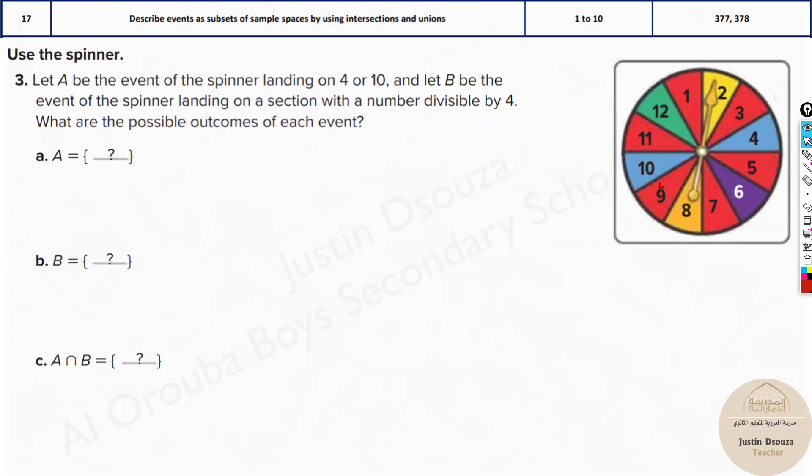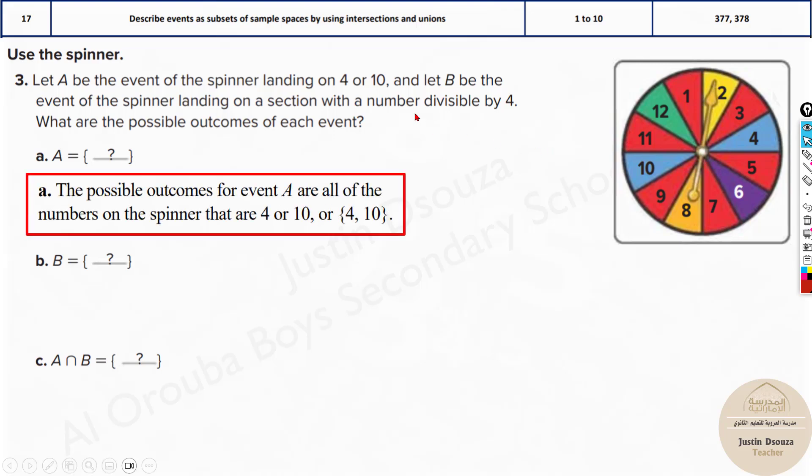Here we have been given a spinner and we need to find these given things. So let A be the event of the spinner landing on 4 or 10. What is A? 4 or 10. That's it. So that will be the answer. And what is B? Spinner landing on a section which is divisible by 4. Which is divisible by 4 or you can even consider it to be multiple of 4. It's the same thing.